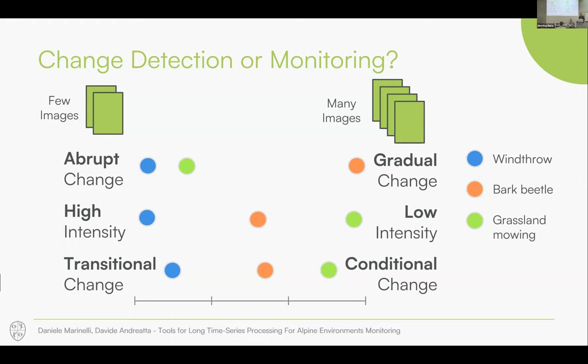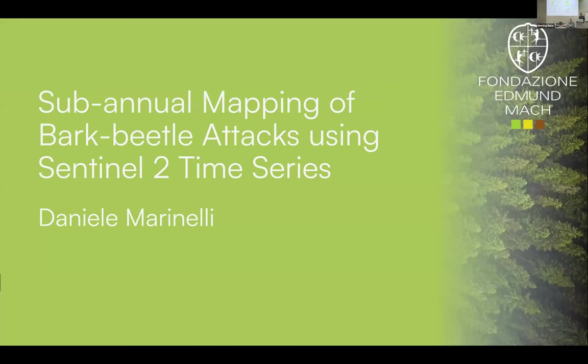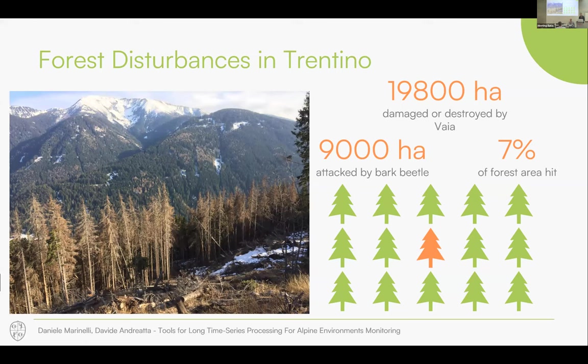What we focused on, in particular myself and Davide, was bark beetle and grassland mowing detection. Regarding bark beetle: if you did some sightseeing in Trentino Alto Adige, you may have seen patches of red trees attacked and killed by bark beetle. In Trentino, the estimated damage at the end of 2022 was around almost 10,000 hectares, and it is foreseen that the damage may be even higher than that of Vaia. Bark beetle is the new challenge for forests not only in Trentino but the entire Alps.